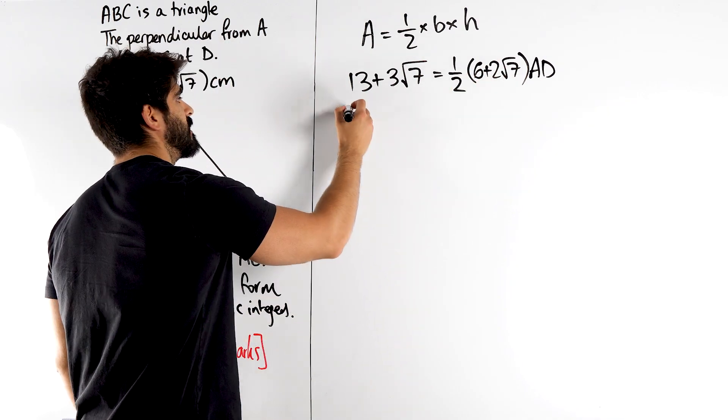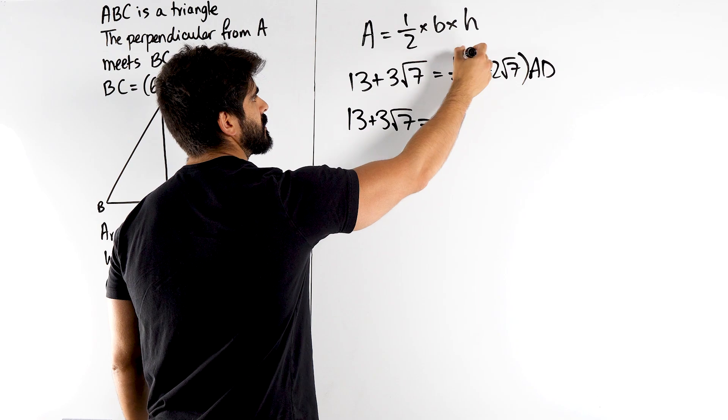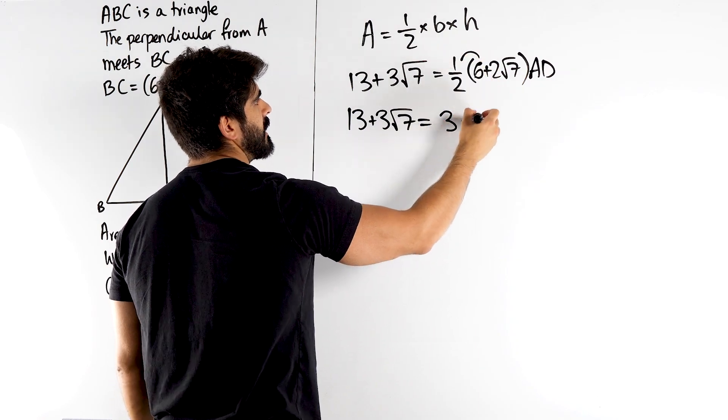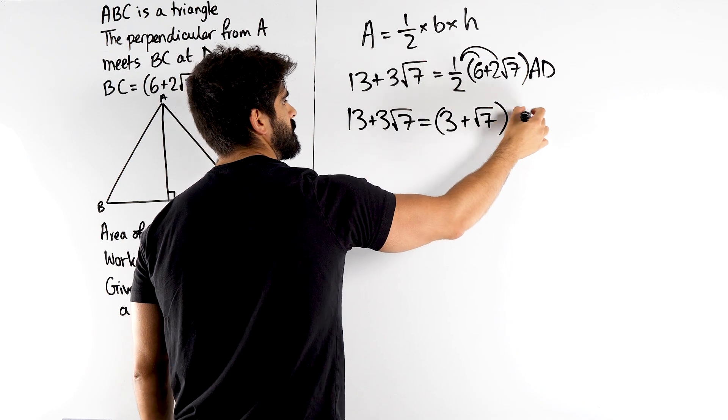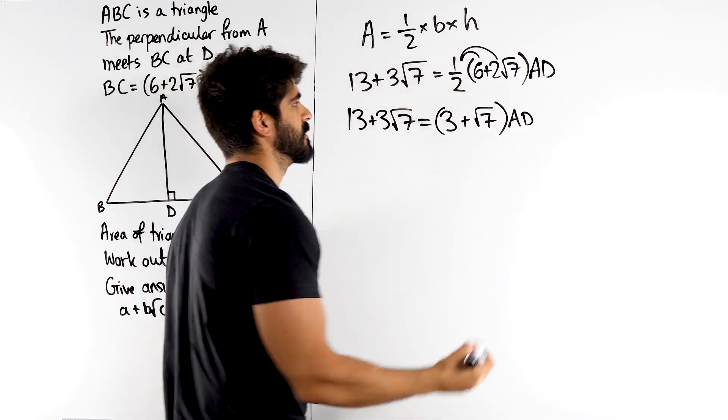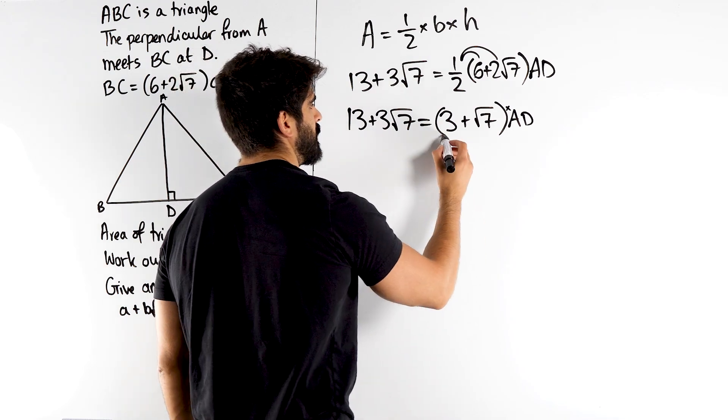I can half this, so I get 13 plus 3 root 7 is a half of 6, 3, and a half of 2 is 1, so we just get root 7, times AD. Remember, this is multiplication, so if we want to rearrange for AD, we just divide by this bracket.